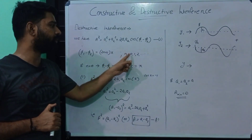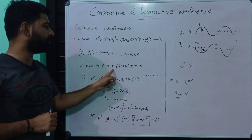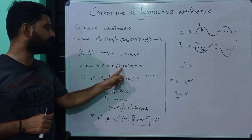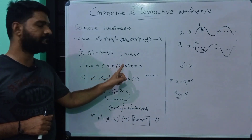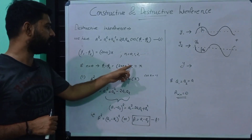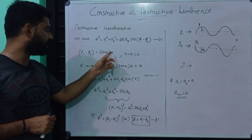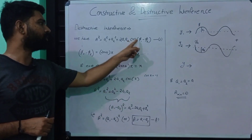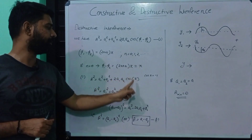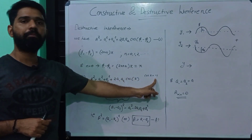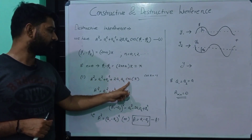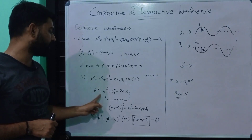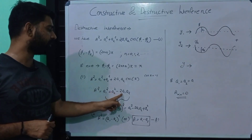We will first consider the case where n is equal to 0. Then φ1 minus φ2 equals (2×0 + 1)×π, which equals π. Applying equation number 1: a squared equals a1 squared plus a2 squared plus 2·a1·a2·cos(φ1 minus φ2), and since φ1 minus φ2 equals π, cos π equals minus 1.